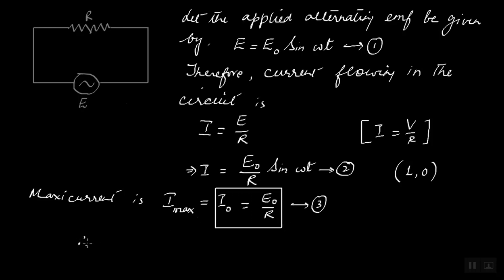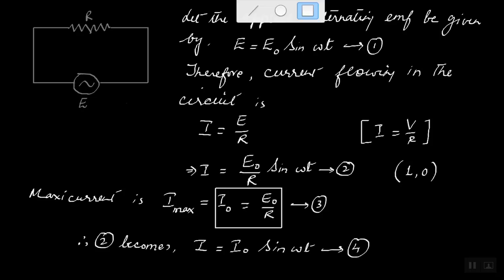So therefore, equation two becomes I equals I naught sine omega t. This is equation four. So we have obtained the expression for the alternating current flowing in this circuit.